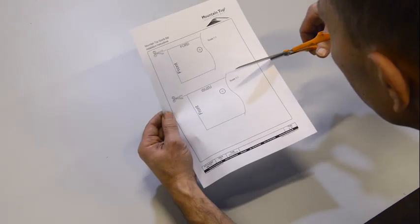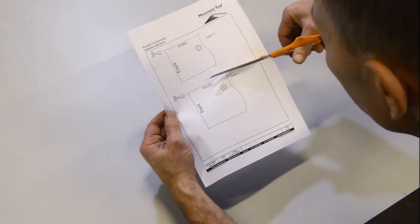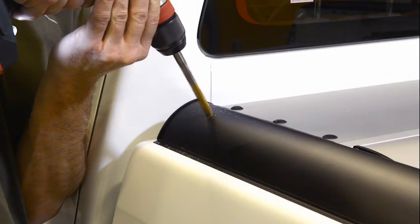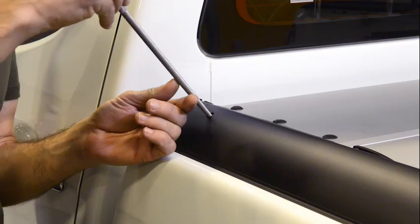In the instruction manual, you will find a template to use for drilling the cable hole. Place the template over the left-hand side profile and drill the hole. Deburr the hole.